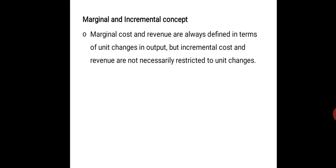Marginal cost and marginal revenue are always explained with the help of a unit change — the change in total cost when one more unit is being produced. But incremental cost and revenue are not necessarily restricted to unit changes.